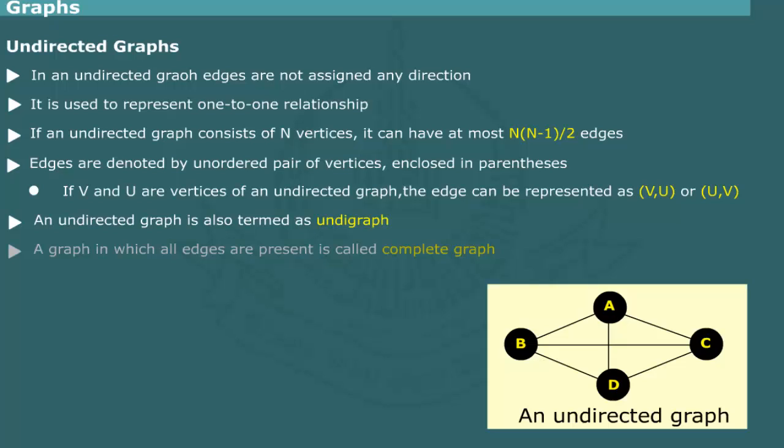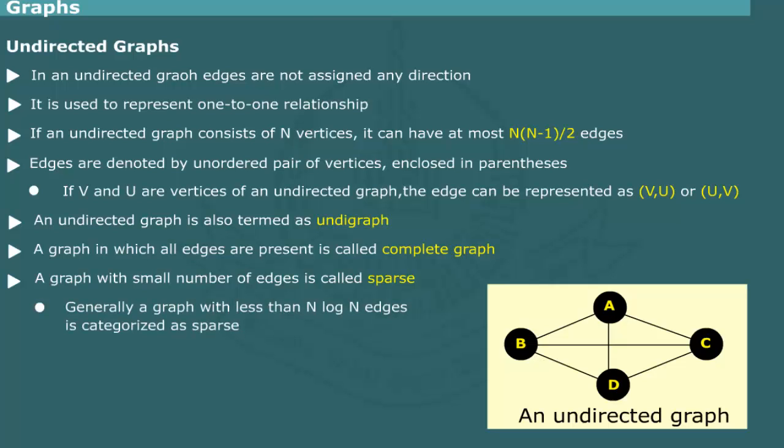A graph in which all the edges are present is called a complete graph. By contrast, a graph with comparatively fewer edges is called sparse. Generally, a graph with less than n log n edges, where n is the number of vertices, is categorized as sparse.